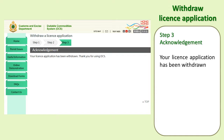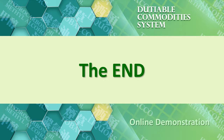Step 3: Acknowledgement. Your application has been withdrawn. The department may request supplementary information or documents if required. Please pay attention to the email notification. This is the end of the online demonstration about withdrawing a license application. You may refer to the links below to learn more about the procedures for follow-up actions through online demonstration.